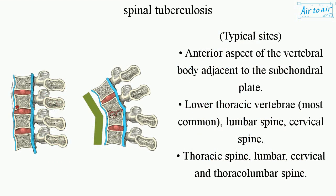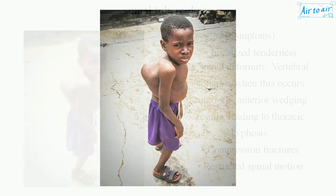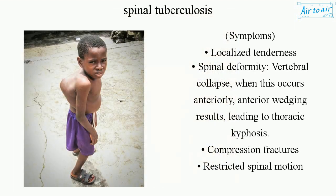Typical sites include the anterior aspect of the vertebral body adjacent to the subchondral plate. The most common site is the lower thoracic vertebrae, followed by the lumbar spine, cervical spine, and thoracolumbar spine. Symptoms include localized tenderness, spinal deformity, and vertebral collapse.